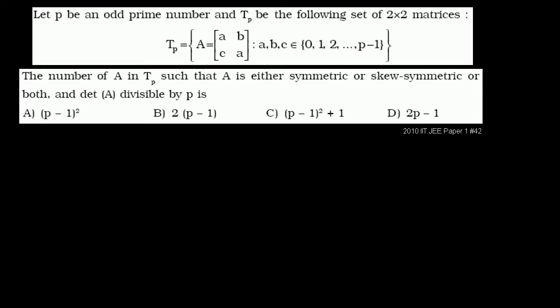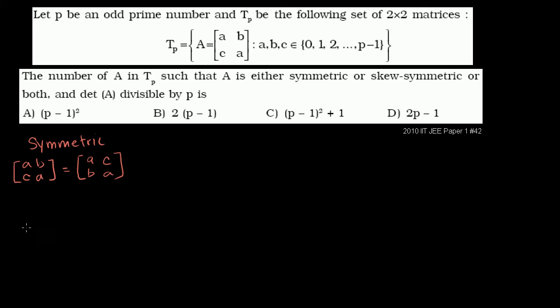Let's make sure we understand what symmetric and skew symmetric mean. A matrix is symmetric if it equals its transpose. For a matrix [[a,b],[c,a]], the transpose swaps rows and columns: the first row AB becomes the first column, and the second row CA becomes the second column. So symmetric means B must equal C.